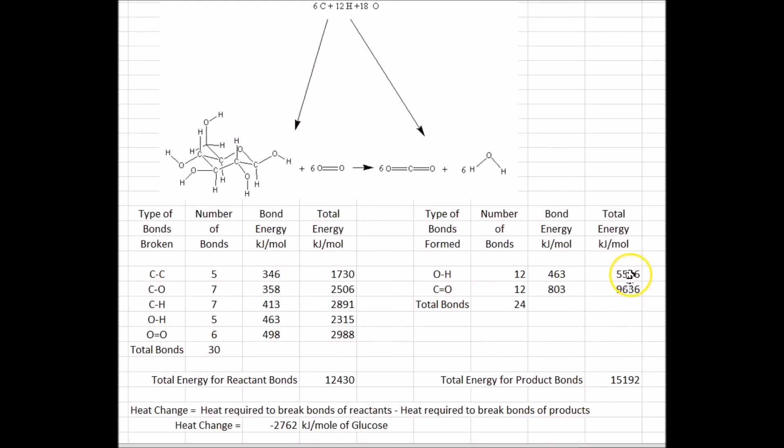And if you look at the products, you get more than that, 15,192 kilojoules. So if you take the difference between those heat required to break the bonds, which is positive, minus the heat released, which is negative, you get a negative heat change, meaning it's an exothermic reaction with minus 2,762 kilojoules per mole. This is an approximation, but probably a pretty good one because we're using average bond energies to calculate it.